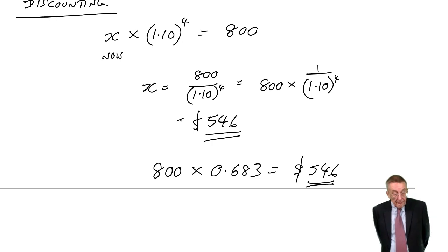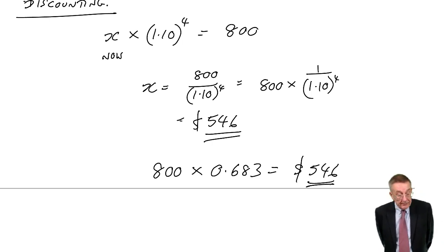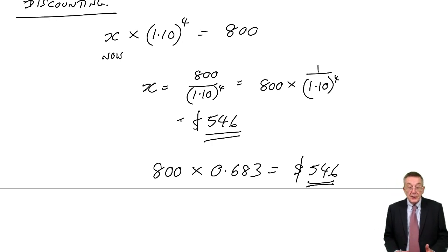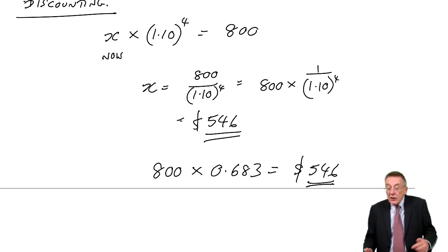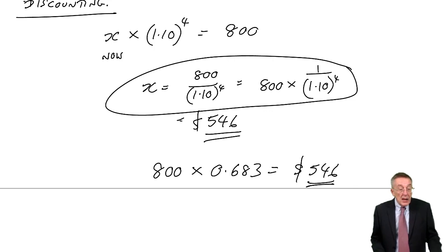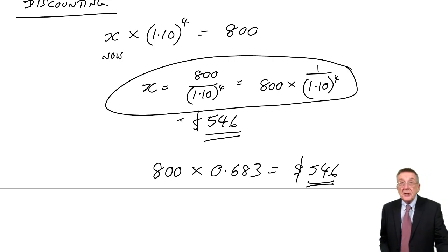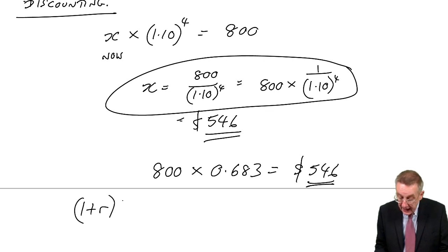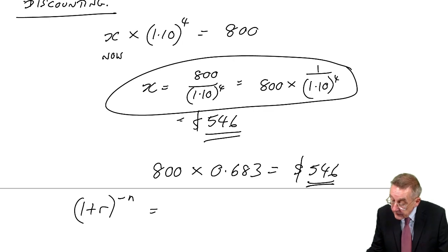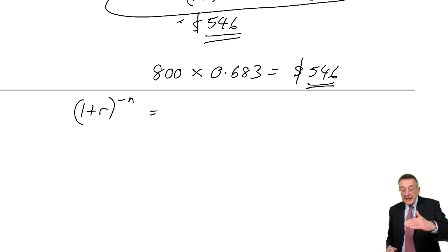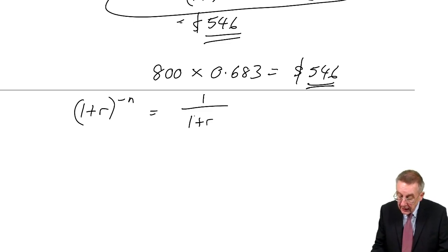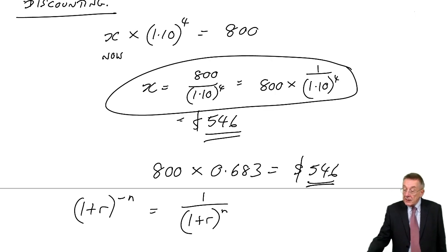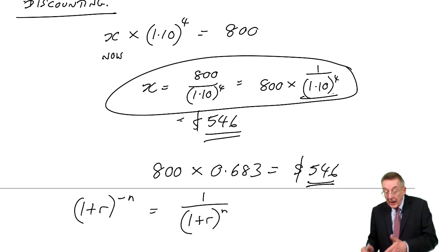The only problem is that you can only use the tables for whole percentages up to 20%, and for up to 15 years — normally that's all you'll need. But if you were asked to do it at 25%, you can't use the tables; you would have to use the formula. The formula is given at the top of the tables: present value of 1, written as 1 plus r to the minus n. Putting something to the minus power is the same as 1 over 1 plus r to the power n — which is what we were doing, multiplying by 1 over 1.1 to the power 4.